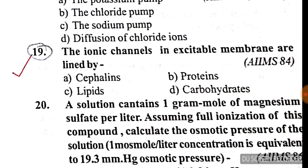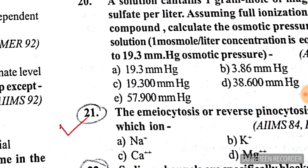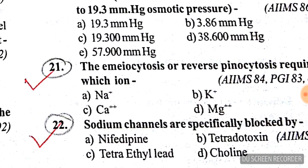Question number 19: the ionic channels in excitable membranes are lined by — the answer is B, protein. Question number 21: exocytosis, or reverse pinocytosis, requires which ion? See all options carefully — the answer is C, calcium.